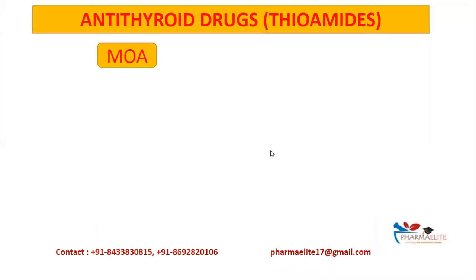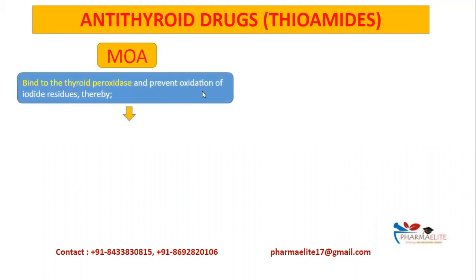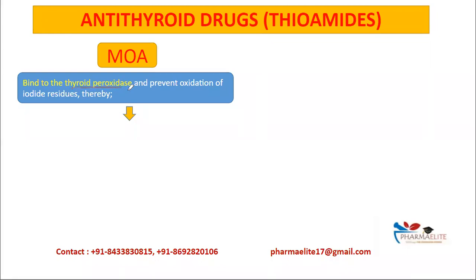Now let's look at the mechanism of action of propylthiouracil specifically. Propylthiouracil binds to an enzyme known as thyroid peroxidase — this is very important. Thyroid peroxidase catalyzes three important reactions during thyroid hormone synthesis: oxidation, organification, and the coupling reaction.